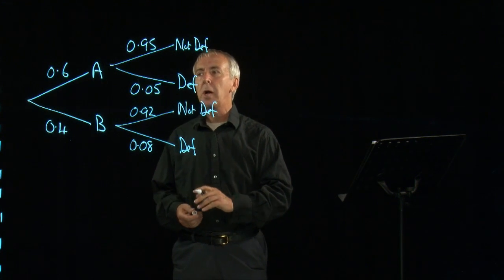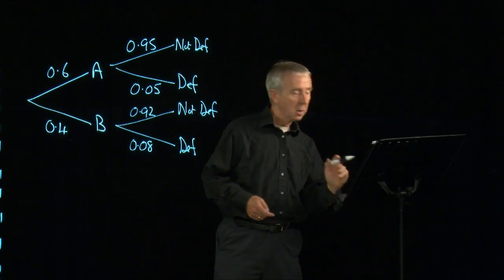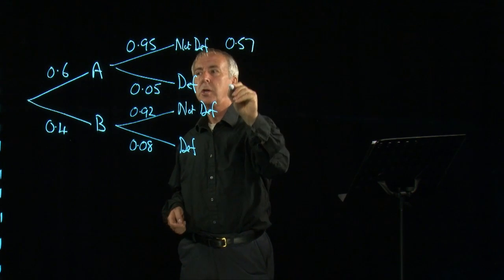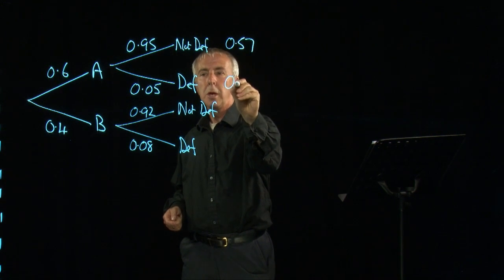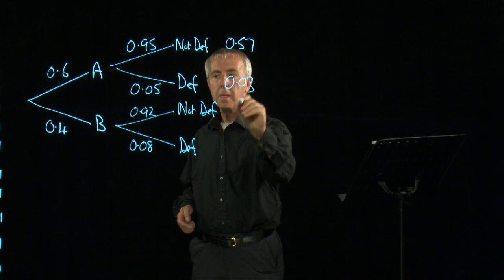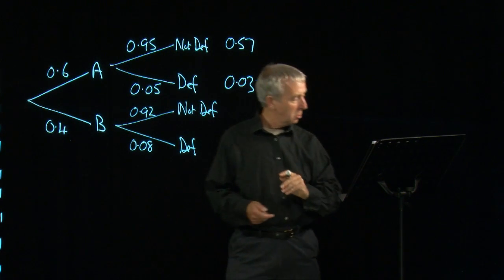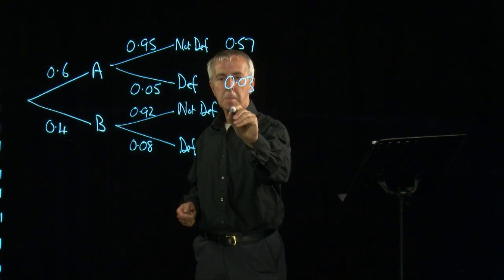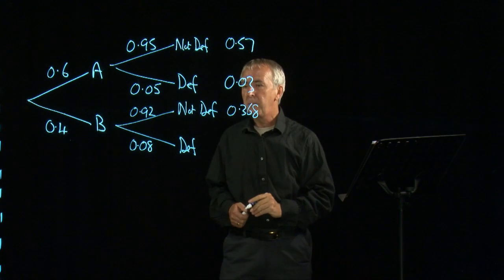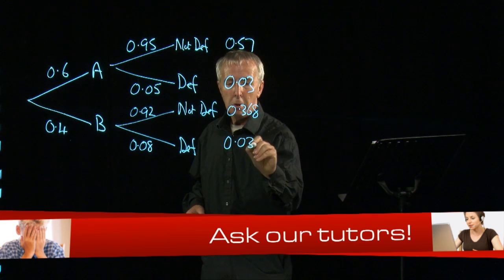And so as before we can work out the numbers by multiplying along. We get 0.57 by multiplying the probabilities there. We get 0.03. Here we get 0.04 times 0.92 which is 0.368. And here we get 0.04 times 0.08 which is 0.032.